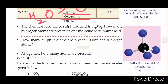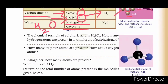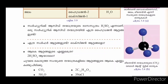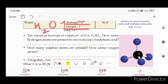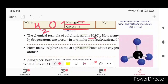Next, we will see. The chemical formula of sulfuric acid is H2SO4. How many hydrogen atoms are present in one molecule of sulfuric acid? Sulfuric acid is H2SO4. The answer is 2.